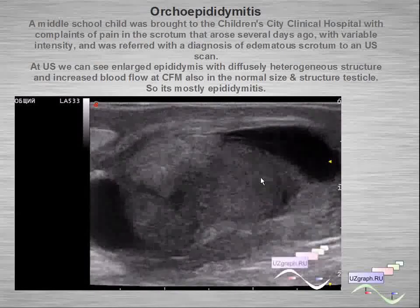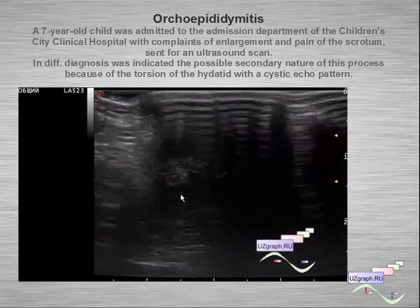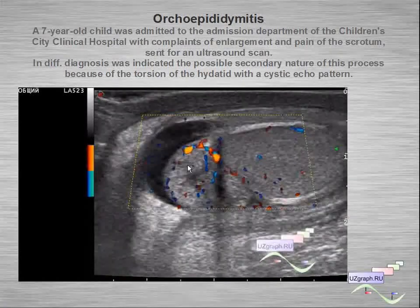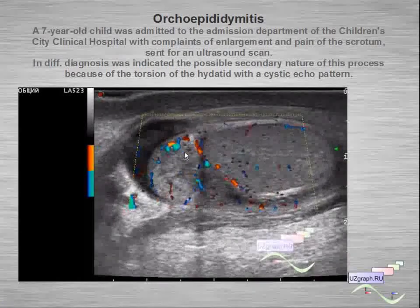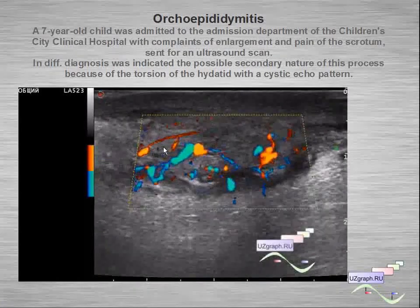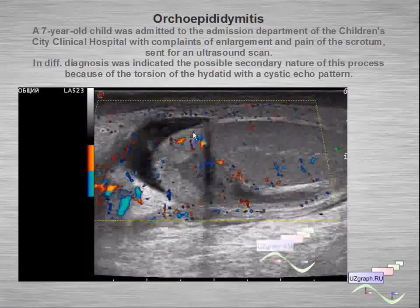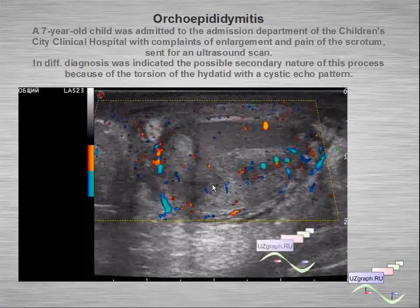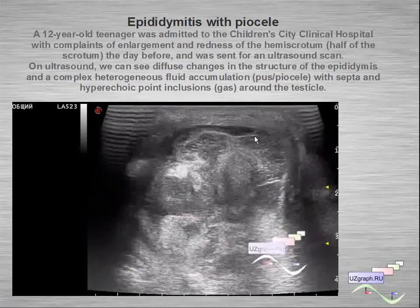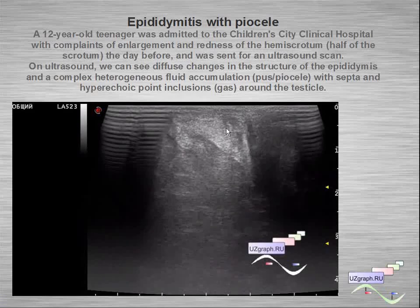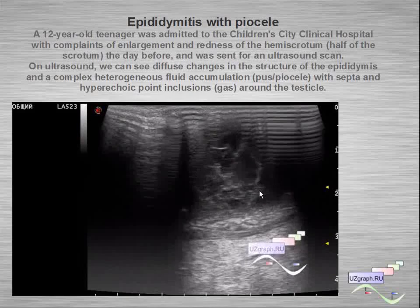Another example of orchido-epididymitis with a heterogeneous enlarged epididymis with a cystic structure inside, which could be an appendage — possibly a torsion of the appendage. We can also see increased blood flow at color flow mode. Another example with pyocele showing a lot of fluid content with septum and hypoechoic point inclusions like gas.